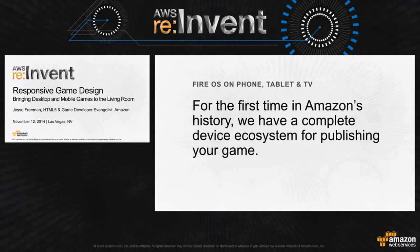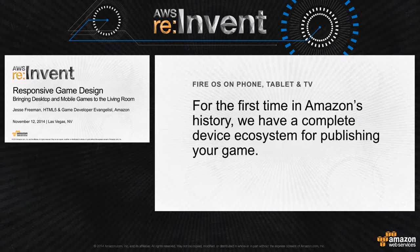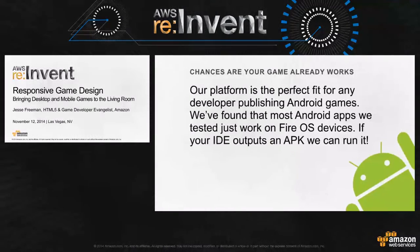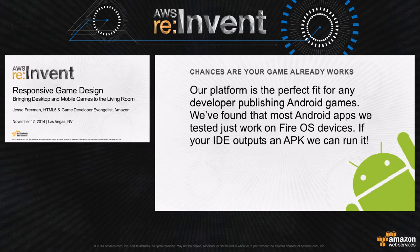For the first time in Amazon's history, we have a complete device ecosystem for publishing your game from phone to tablet to TV. Our operating system, Fire OS, is based on Android. If you're an Android developer, chances are your app already works on our platform, and if your IDE outputs an APK, chances are good that it'll run as well.